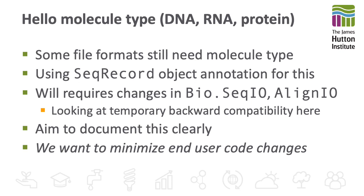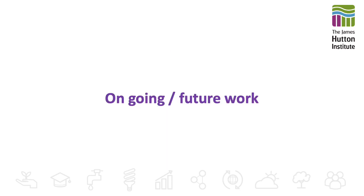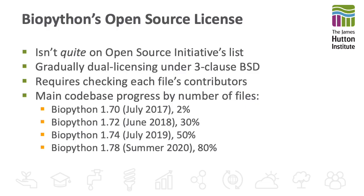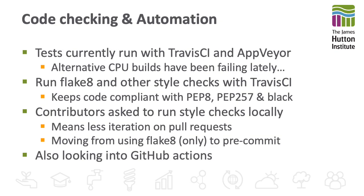That's the main reason we delayed making changes to this area of BioPython for so long — we aim to document this clearly and minimize disruption. In this final section, I'll talk about ongoing and future work. Three years ago, we started dual licensing our code under the three-clause BSD license. We need the permission of all copyright holders and have been checking the files one by one; we're now up to 80% of the main code base. I urge anyone starting a new project to pick a standard open source license as early as possible. The next three slides all have automation as a common theme, and I believe this is more important the bigger a project gets. We use continuous integration to run unit tests and style checks. Following mainstream Python style guides should make it easier for new contributors to work on our code base. Often issues only show up when a pull request is made, so we're hoping to expand our git pre-commit checks to preempt that.